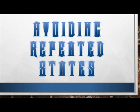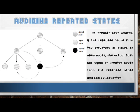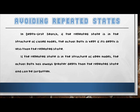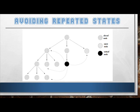For searching algorithms, strategies may visit a state that has already been visited, making it a waste of time. In breadth-first search, if the repeated state is among the closed or open nodes, the actual path has equal or greater depth than the repeated state and can be forgotten. Open nodes are nodes that are generated but not yet explored or expanded, while closed nodes are nodes already explored and expanded. In depth-first search, if the repeated state is in the closed nodes, the actual path is kept if its depth is less than the repeated state. But if the repeated state is among open nodes, the actual path has greater depth and can be forgotten.